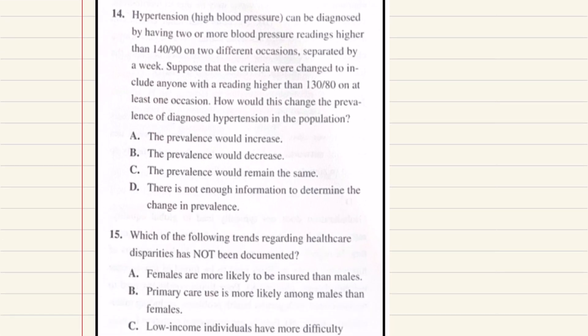Problem fourteen: hypertension can be diagnosed by having two or more blood pressure readings higher than 140/90 on two different occasions separated by a week. Suppose the criteria were changed to include anyone with readings higher than 130/80 on at least one occasion. How would this change the prevalence of diagnosed hypertension? If the threshold were lowered, more individuals would fit the criteria. If the number of individuals with the disease increases and the population stays the same, there will be an increased prevalence — making the correct answer A.